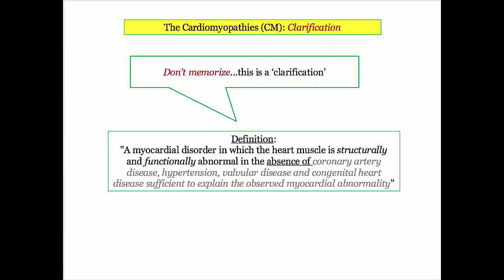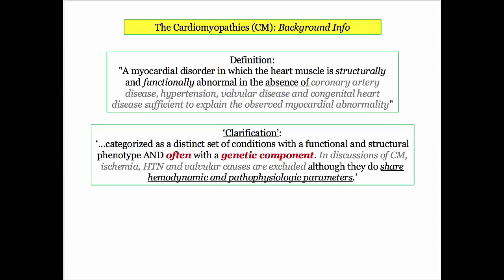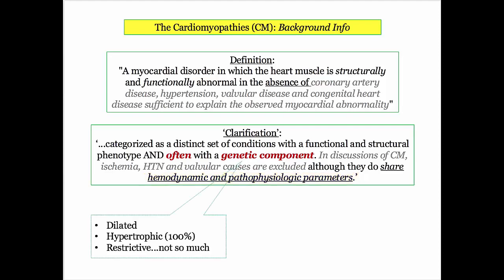Here's the definition of a cardiomyopathy: a myocardial disorder in which the heart muscle is structurally and functionally abnormal in the absence of coronary disease, hypertension, and so on. The definition describes a distinct set of conditions that often have a genetic component and share hemodynamic and pathophysiologic parameters. From the genetic point of view, dilated cardiomyopathy may occur on a genetic basis, whereas hypertrophic cardiomyopathy always occurs on a genetic basis, and restrictive — not so much.